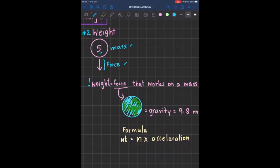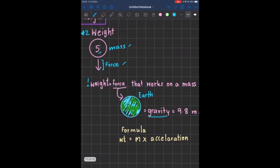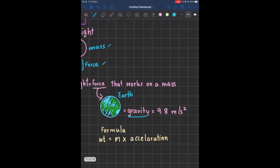Weight equals the force that works on a mass. It's the force that does something to the mass. In our case, we live in planet Earth, and planet Earth's force is what we know as gravity. If you don't already know, gravity has the force of 9.8 meters per second squared.